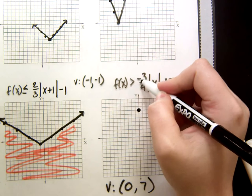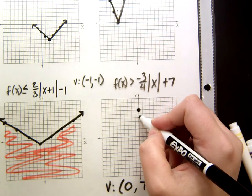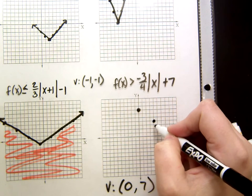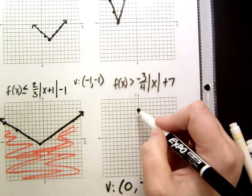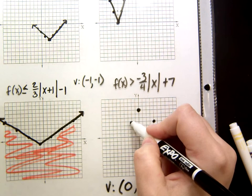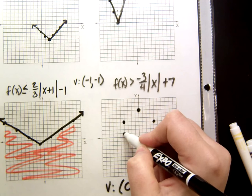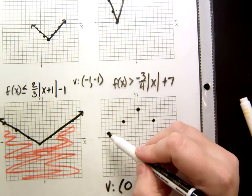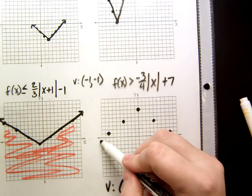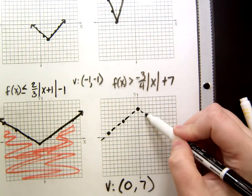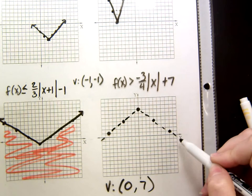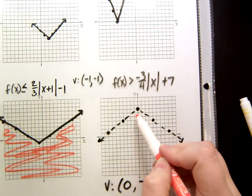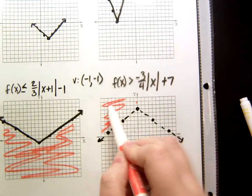And because this is negative 3 fourths, it means I'm going to go down 3, and then over 4. So, down 3, over 4. Now, on the other side, I'm going to go down 3 and left 4. So, positive opens up, negative opens down. Now, because this one is just greater than, I do have to connect my line with its dotted lines. And, because it is greater than, I'm going to shade above my vertex, which is over here.